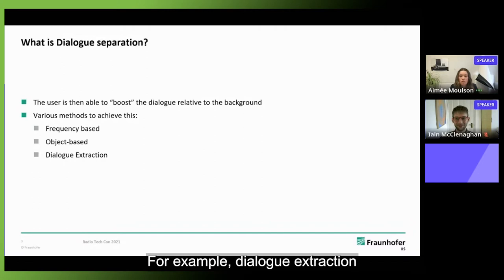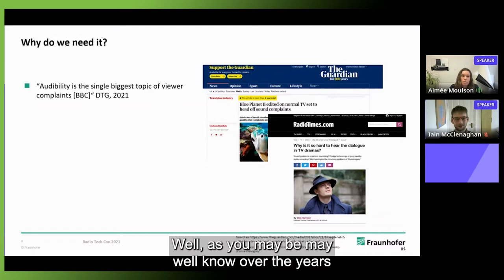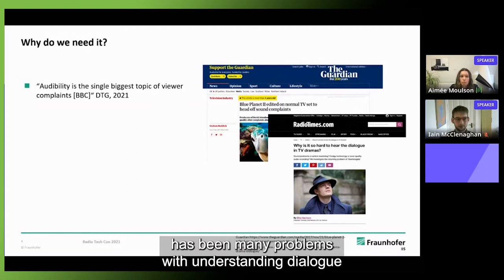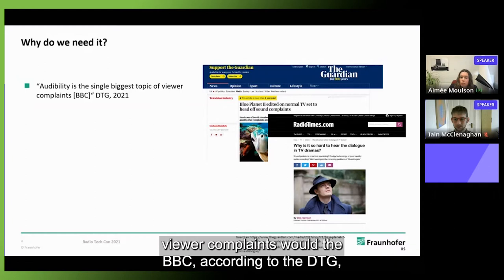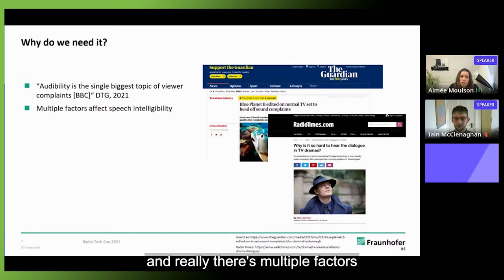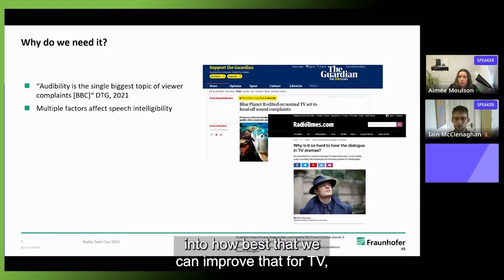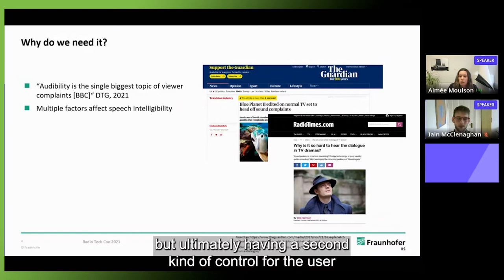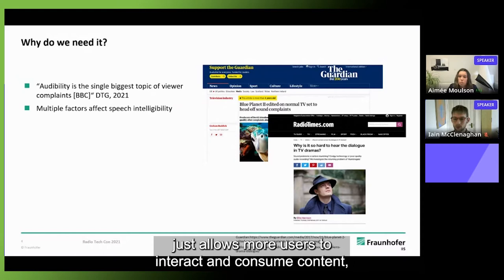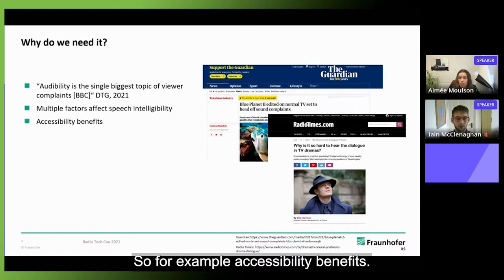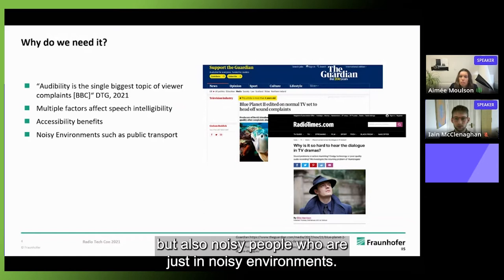So why do we need it? Well, as you may all know, over the years there have been many problems with understanding dialogue in TV. Audibility is the single biggest topic of viewer complaints with the BBC according to the GTG. Really there are multiple factors that affect speech intelligibility. There's been lots of development and concern on the recording and post-production side into how best we can improve that for TV. Ultimately, having a second kind of control for the user just allows more users to interact and consume content.